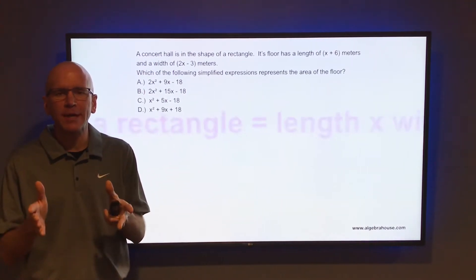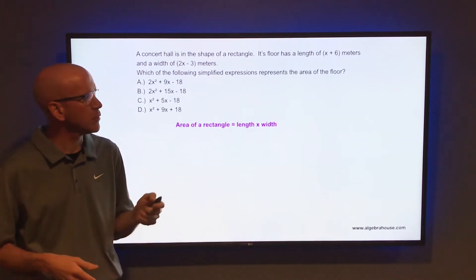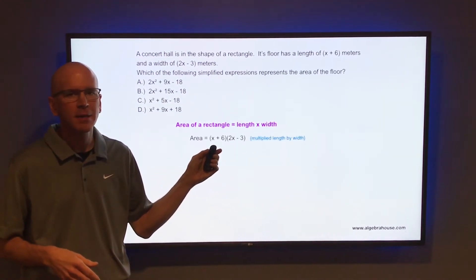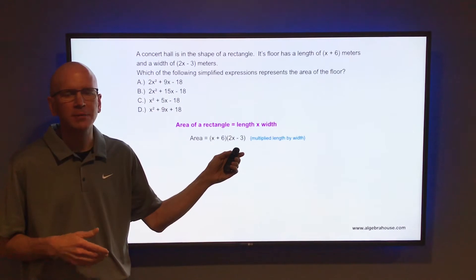Well, to find the area of a rectangle, just multiply length times width. So take the length, which is x plus 6, and multiply that by the width, which is 2x minus 3.